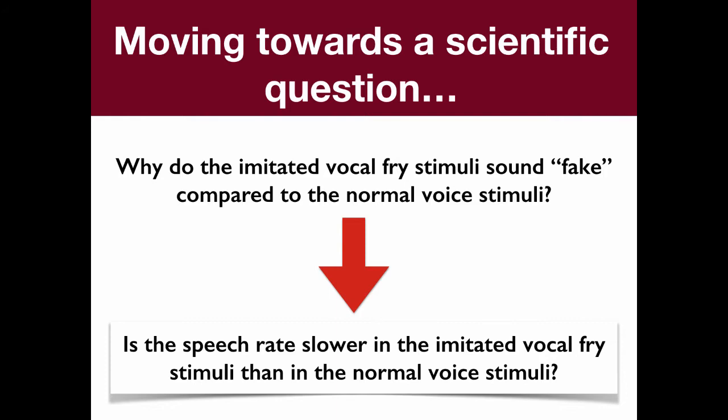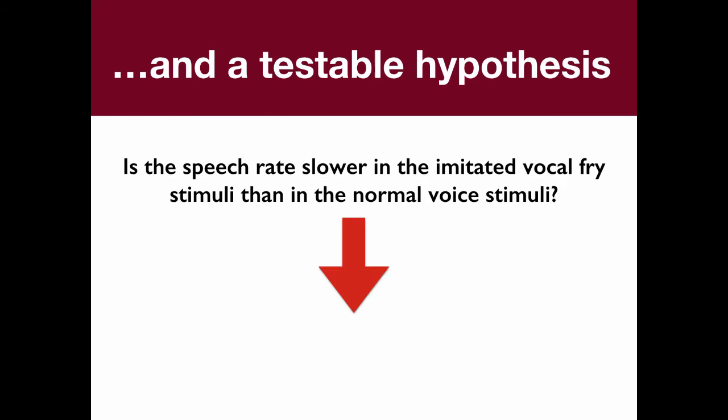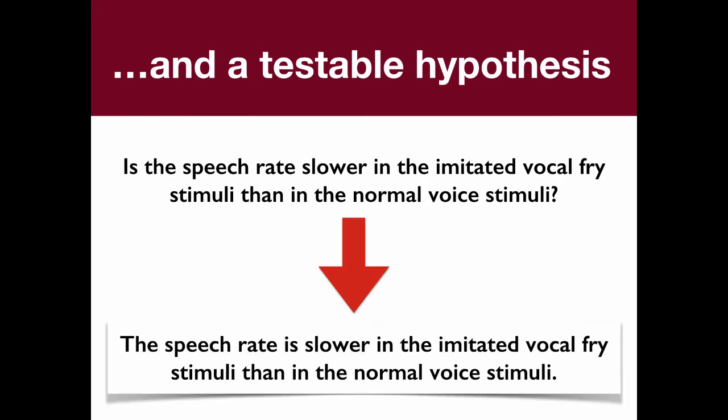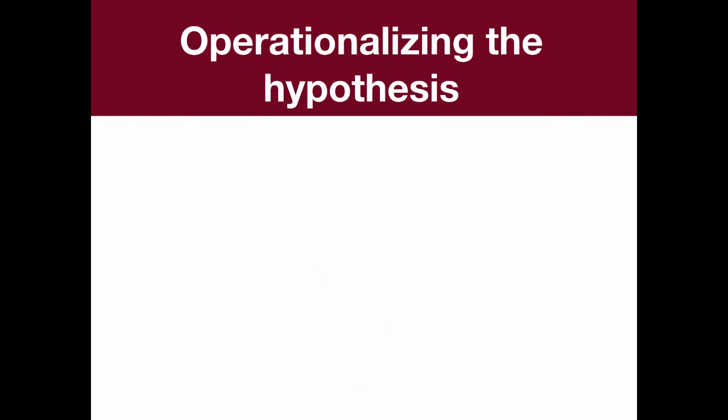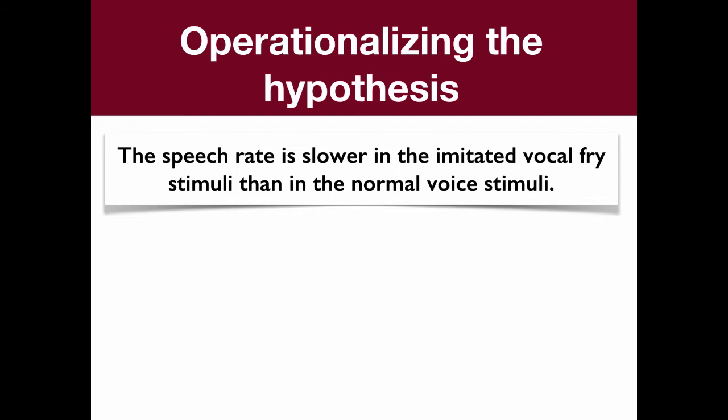Now that we have this more specific question, we can also get a testable hypothesis from this. We can hypothesize that the speech rate is slower in the imitated vocal fry stimuli than in the normal voice stimuli. There we have a potentially testable hypothesis. But the problem is we have to operationalize this hypothesis to make it clear how we're going to test it. So here's our hypothesis: the speech rate is slower in the imitated vocal fry stimuli than in the normal voice stimuli.